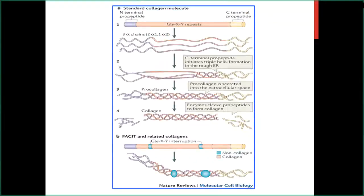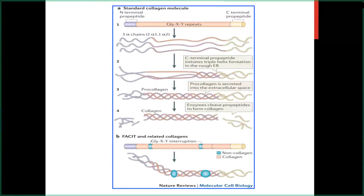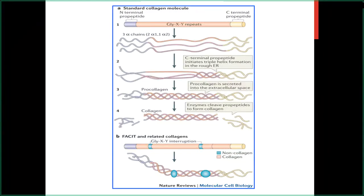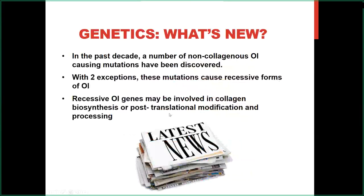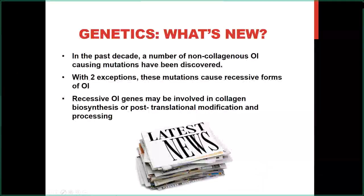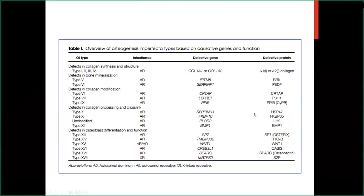Type 1 collagen is a rigid rod-shaped molecule consisting of two alpha-1 and one alpha-2 chains forming a triple helix, with glycine at every third position of the amino acid triplets. Glycine is the smallest amino acid, and any substitution of glycine is likely to disrupt the triple helix structure. Over the past decade, a number of non-collagenous OI-causing mutations have been discovered. With two exceptions, these mutations cause recessive forms of OI. Recessive OI genes may be involved in collagen biosynthesis or post-translational modification and processing.